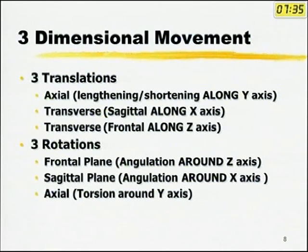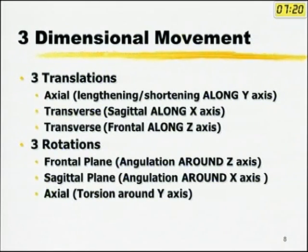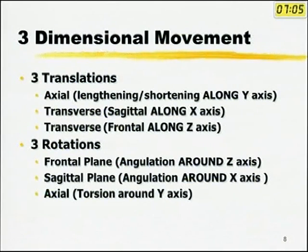When you want to correct deformities, you normally have basically just two kinds of movement: translation and rotation. Even if we are talking of angular correction, it is actually a rotation occurring around a particular axis. Lengthening or shortening is a translation along the Y-axis. Transverse movements in the frontal plane are along the X-axis. Transverse movements front to back are along the Z-axis. Similarly, there are three rotational movements: in the frontal plane, the sagittal plane, and the axial plane.